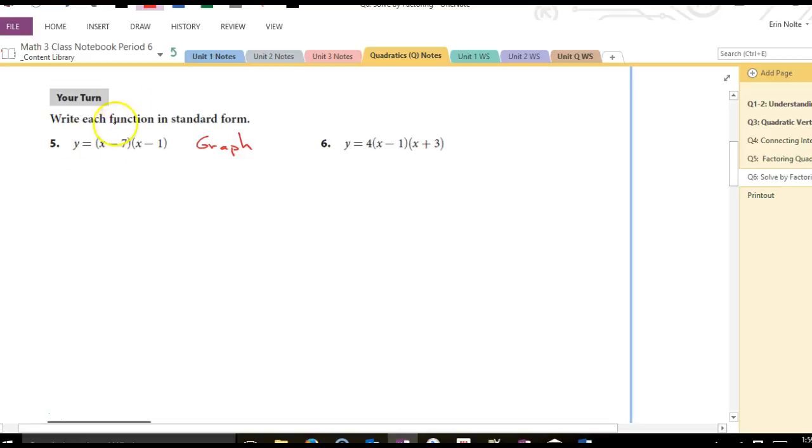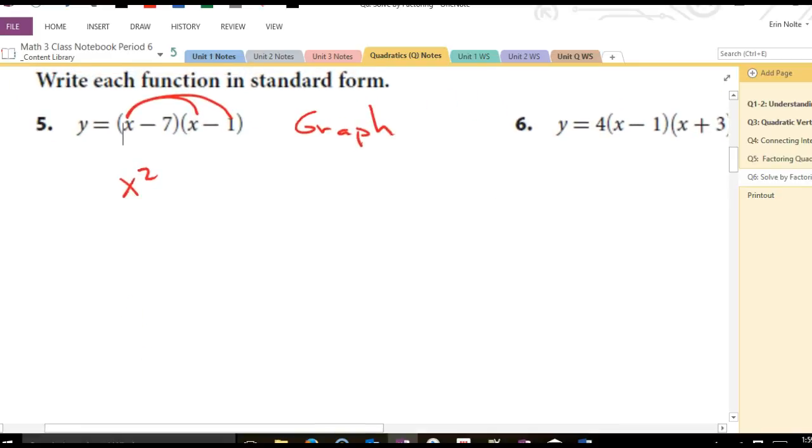To do that I would have to FOIL. What is X times X? X squared. And what's X times negative 1? Negative X. And then what's negative 7 times X? Negative 7X. And what's negative 7 times negative 1? Good, 7. So if I add my like terms I have X squared minus 8X plus 7.